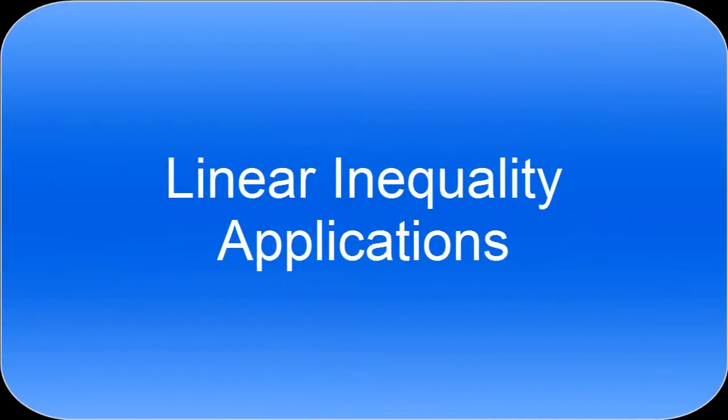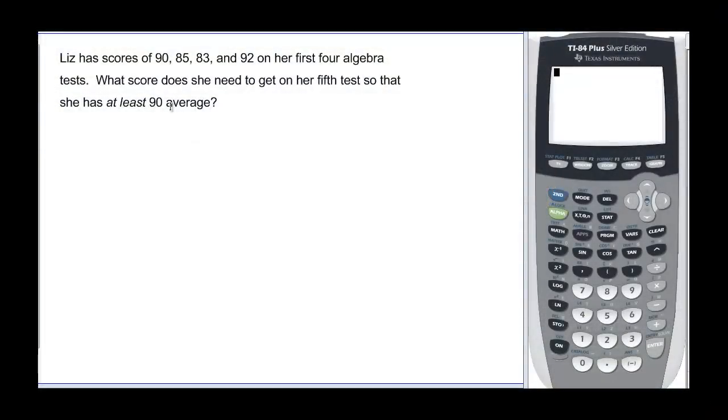This video will talk about inequalities in word problems. Our first example says Liz has scores of 90, 85, 83, and 92 on her first four algebra tests. What score does she need to get on her fifth test so that she has at least a 90% average?